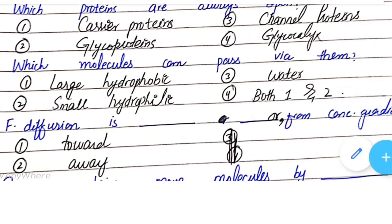Which molecules can pass via channel or carrier proteins with the help of facilitated diffusion? Option one - large hydrophobic molecules, option two - small hydrophobic molecules, option three - water, option four - both one and two. Basically, option four is correct. Facilitated diffusion is towards or away from the concentration gradient?